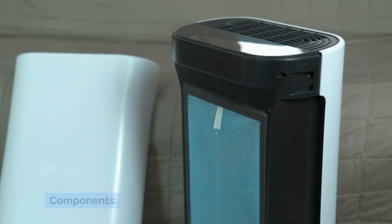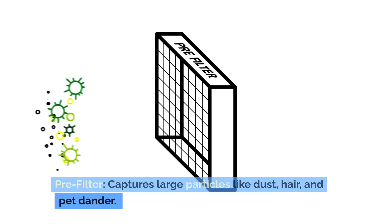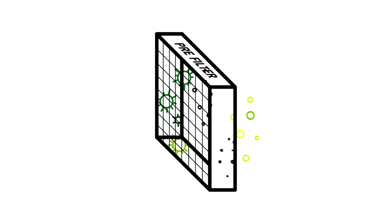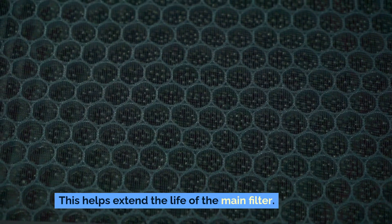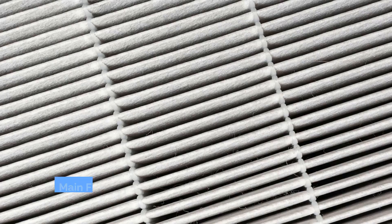Components. Pre-filter: captures large particles like dust, hair, and pet dander. This helps extend the life of the main filter.